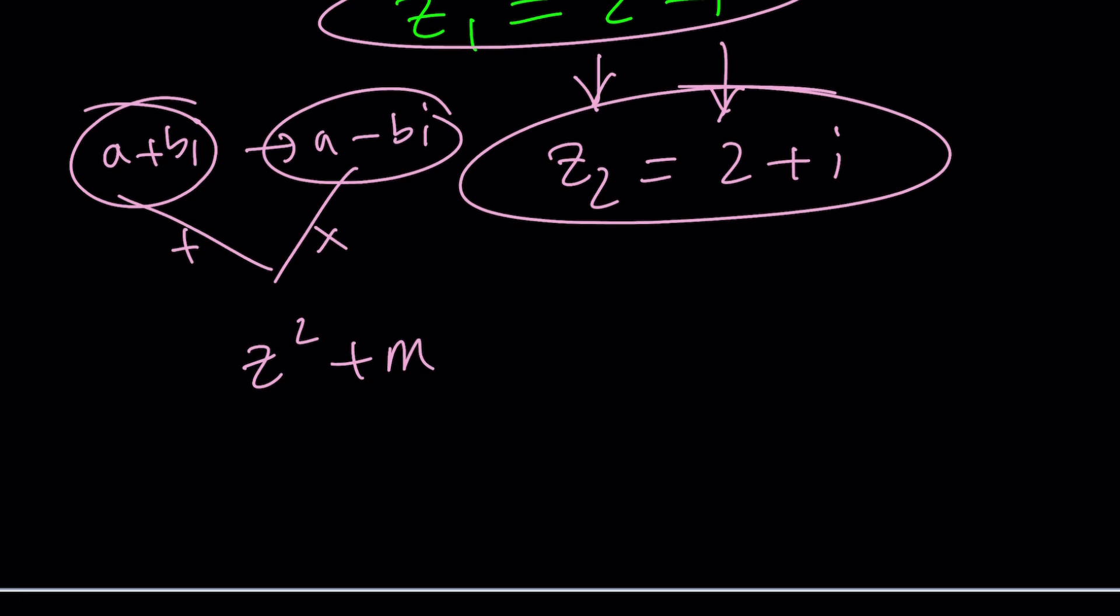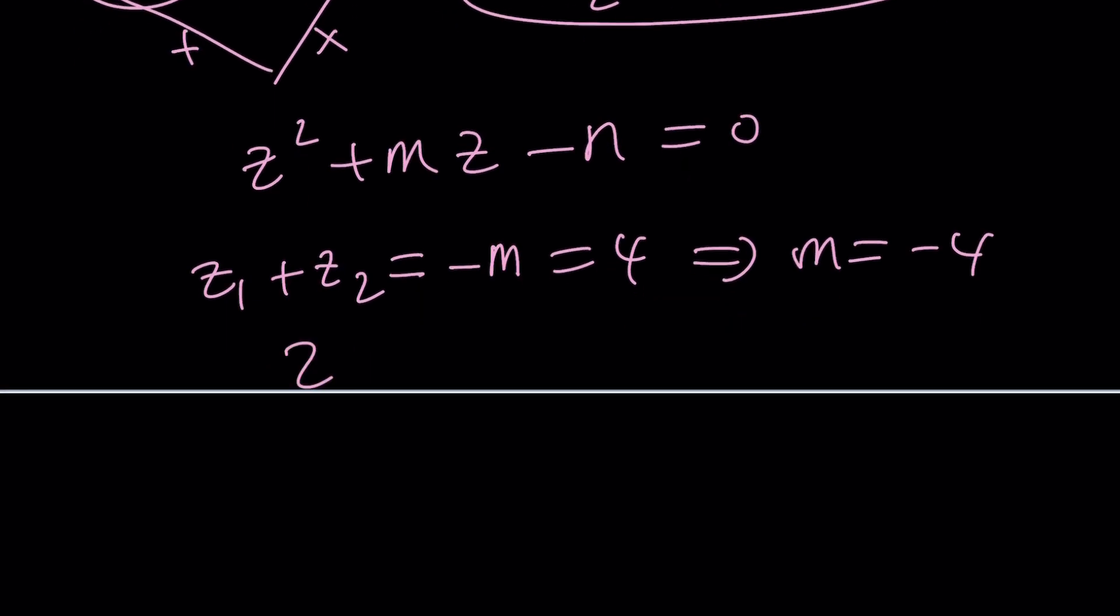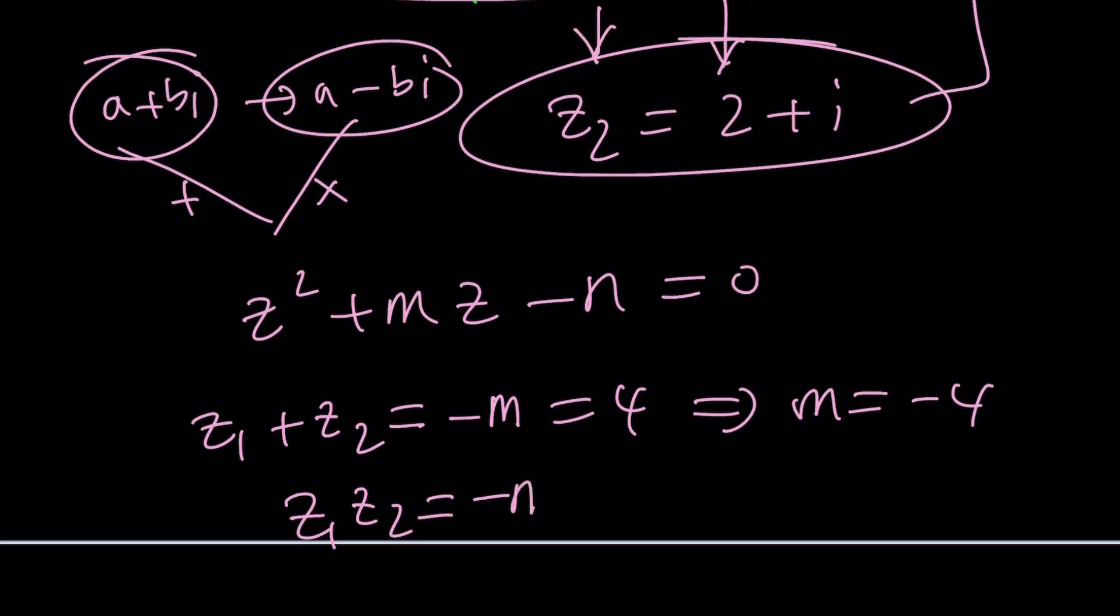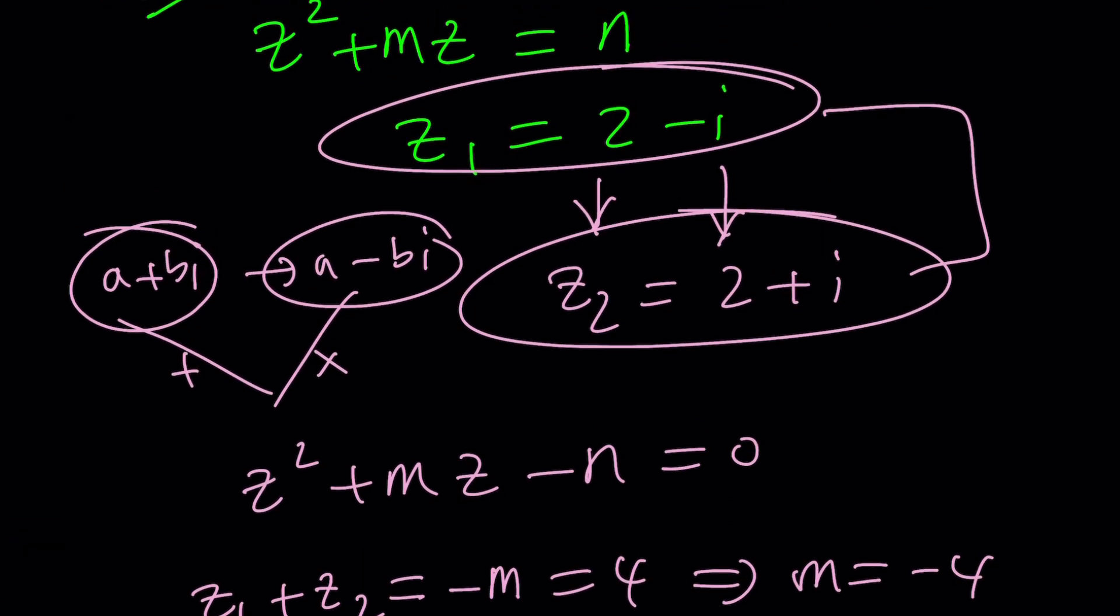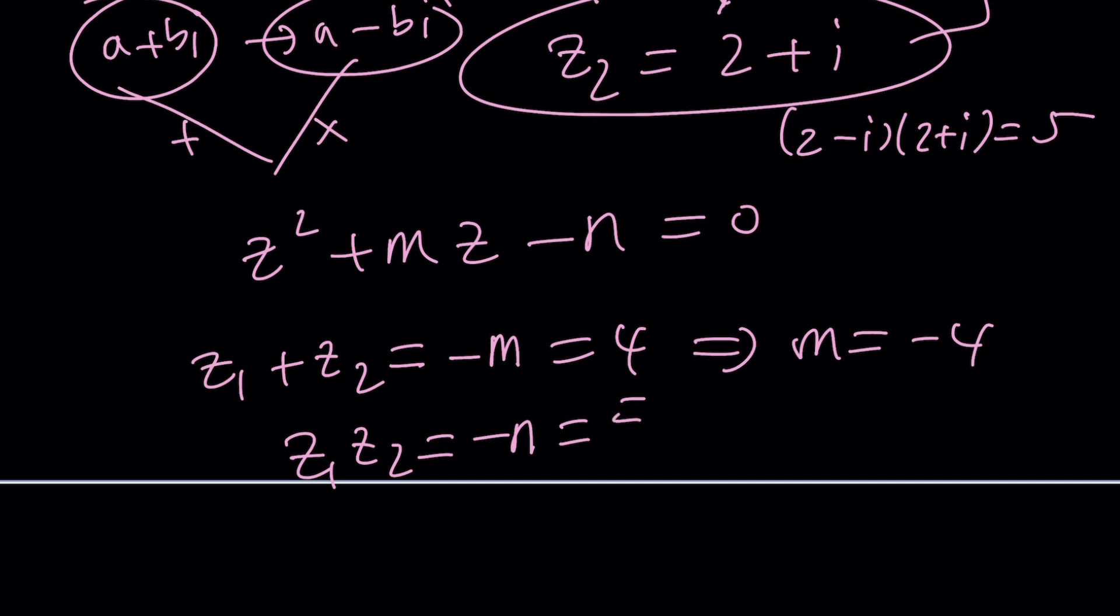So, those are the roots. And now, I can use Vieta's formulas one more time. Let's go ahead and put everything on the same side first. And what is z sub 1 plus z sub 2? It's negative b over a. It's supposed to be negative m. And notice that the sum of these two things is 4. So, from here, m becomes negative 4. And then the product is c over a, Vieta's formulas, which is negative n. And their product is 2 plus i. If you multiply these two things, you get 2 squared, which is 4 plus 1, which is 5. So, from here, n becomes negative 5.